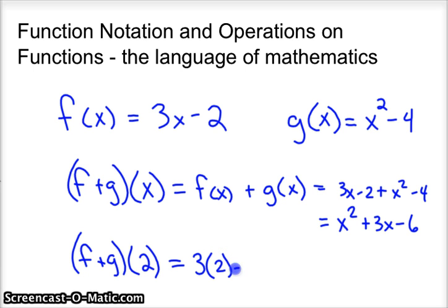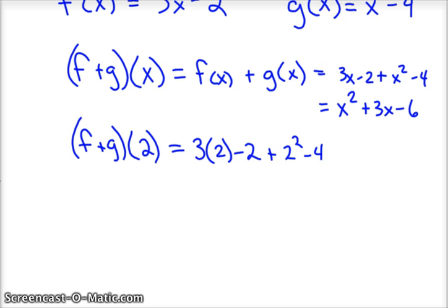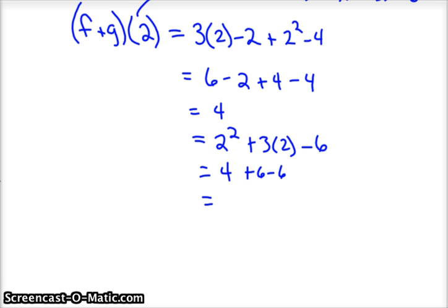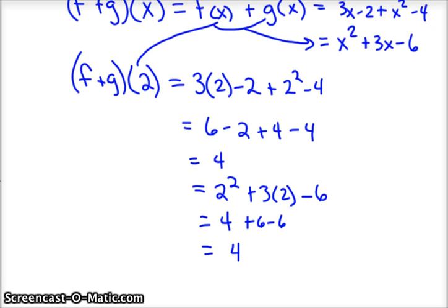So that would be 3 times 2 minus 2 plus 2 squared minus 4. And you simplify that, and you get 6 minus 2 plus 4 minus 4. So 6 minus 2 is 4. And since we already added the 2 together here and here and got this as a result, you could have just taken the 2 and plugged it in there. Just to show you that it works, it'd be 2 squared plus 3 times 2 minus 6. Well, 2 squared is 4 plus 6 minus 6, they disappear. And so you'd end up with just 4 again. So that just shows you could simplify it with x involved first.